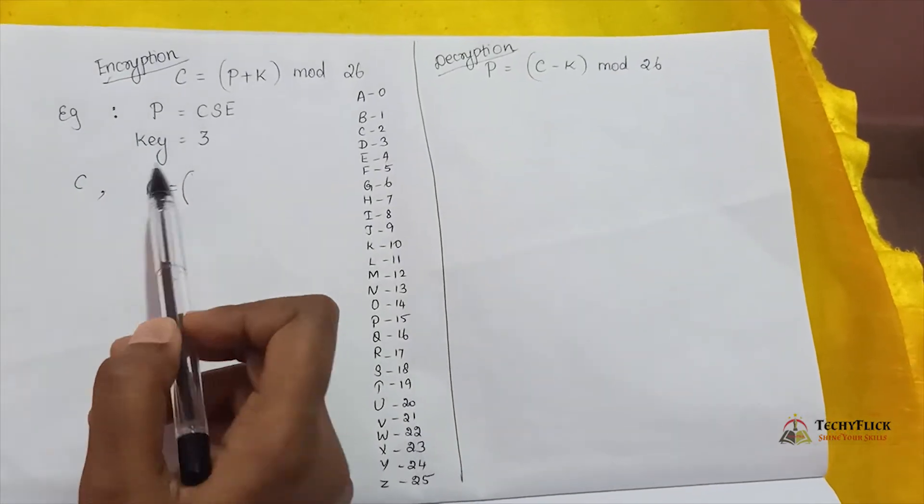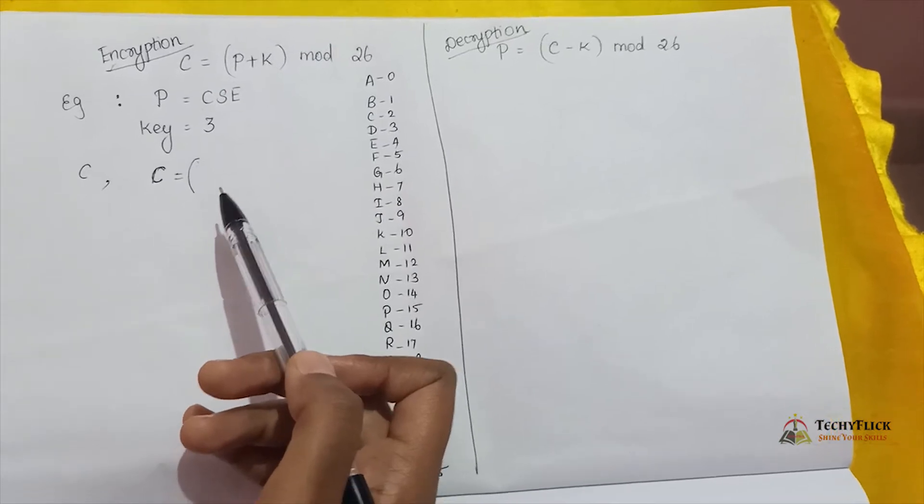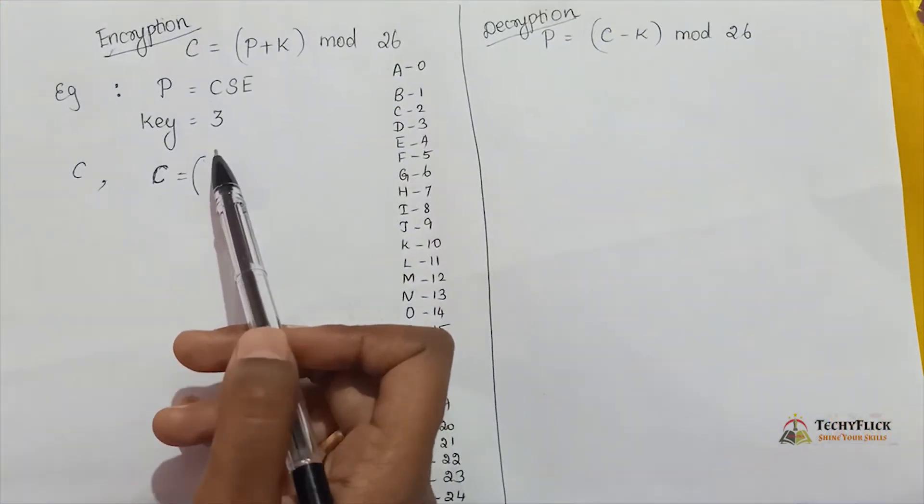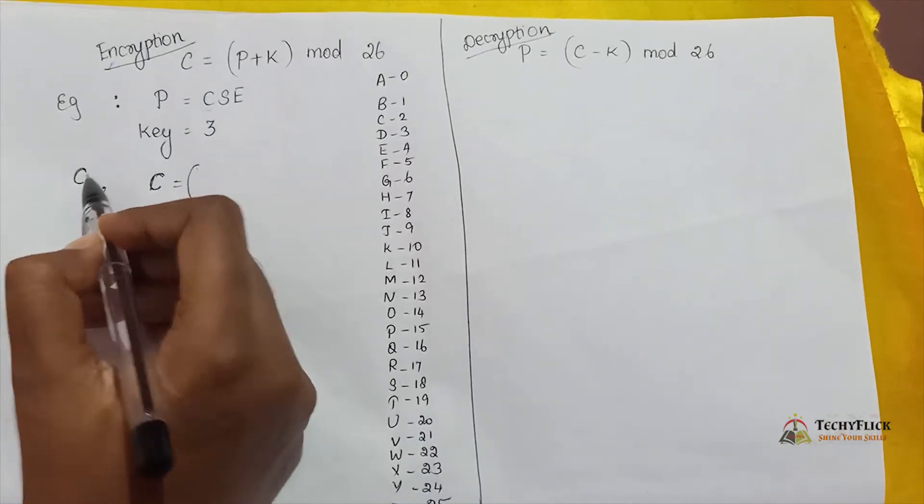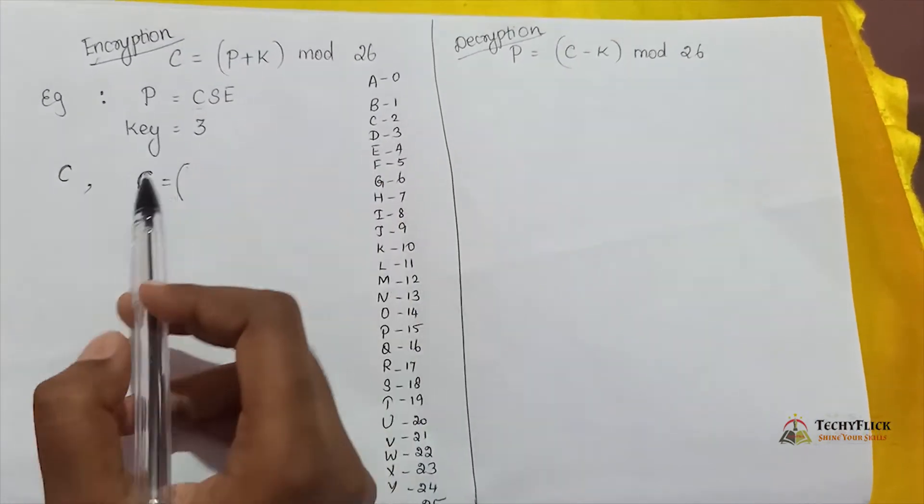The key value is 3. First, the letter C in CSE. Using the ciphertext formula P, that is plaintext. What is the value for C? 2.